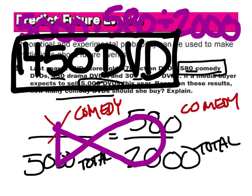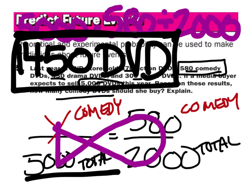When predicting how many DVDs you would sell out of 5,000, you can set up a proportion like this because the relationship should be proportional.